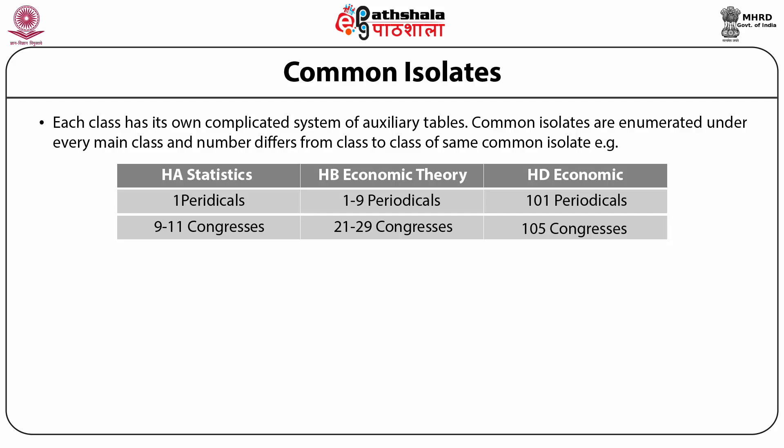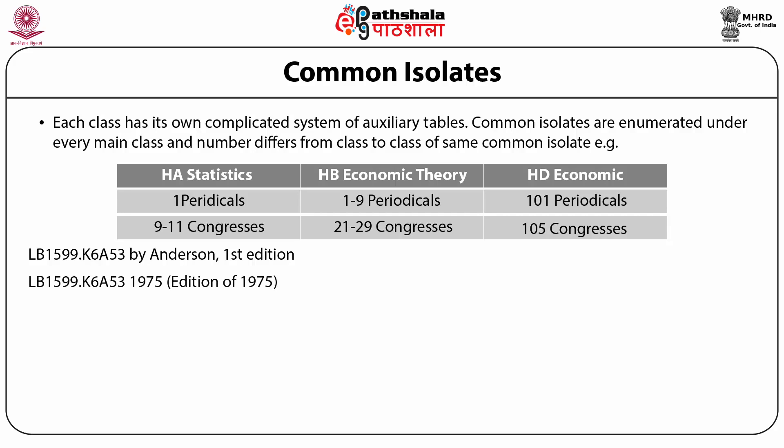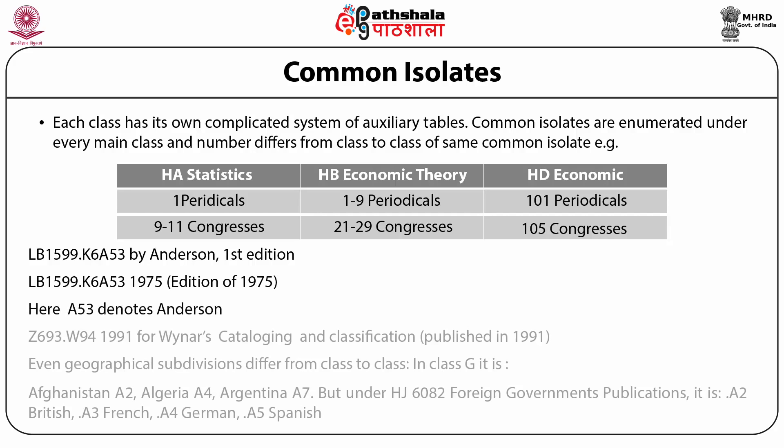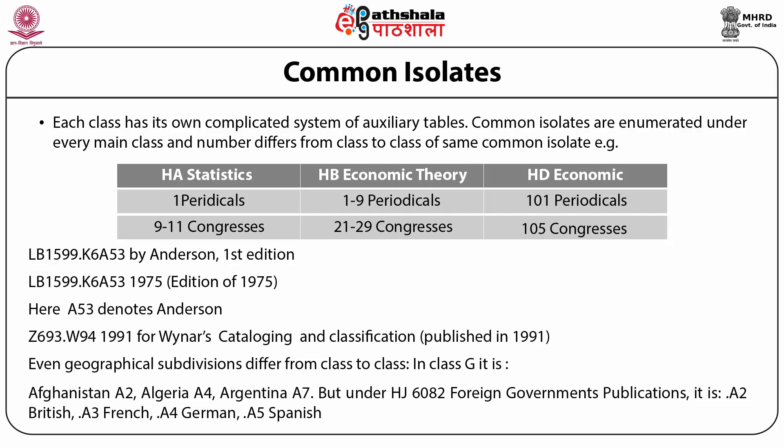Another example of a class number: LB1599.K6A53 by Anderson, First Edition. Similarly, the same book when we add 1975 to it, it becomes an edition of 1975. Here A53 denotes Anderson, who is the author, and so on.